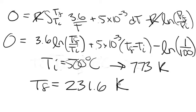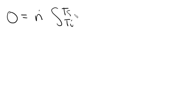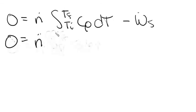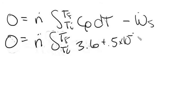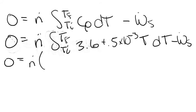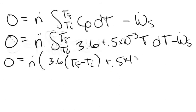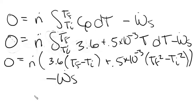Now we use this outlet temperature in our open system energy balance: 0 = N-dot × ∫(T_i to T_f) Cp dT − W_s. Substituting the Cp expression: 0 = N-dot × ∫(T_i to T_f) [3.6 + 0.5×10⁻³T] dT − W_s. Evaluating the integral gives 0 = N-dot × [3.6(T_f − T_i) + 0.5×10⁻³(T_f² − T_i²)/2] − W_s. We now have both temperatures, so we can solve for shaft work.